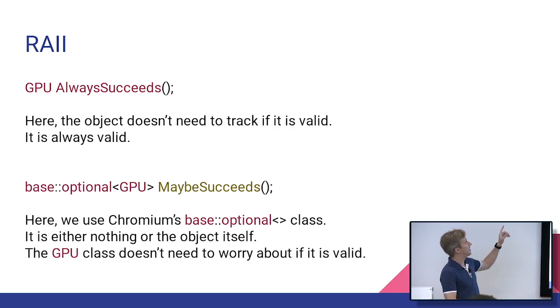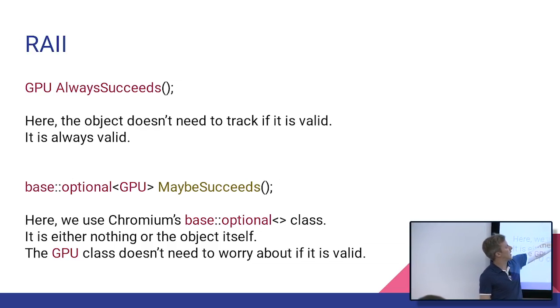A better way would be to have a function that always succeeds, and it just returns an instance of our GPU class. And now we don't have to track, did it fail, did it not? In this function, it will always succeed. The class itself doesn't need to know if it could have failed. And if we didn't have the option for it to always succeed, like maybe it could have failed, let's not store it in the class. Let's use something like baseOptional.